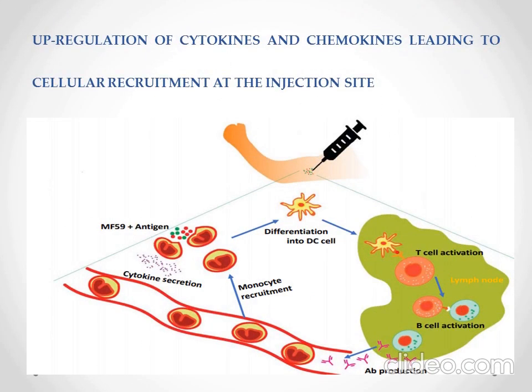The next step is the up-regulation of cytokines and chemokines, leading to cellular recruitment at the injection site. Adjuvants create a local pro-inflammatory environment and recruit immune cells. The cluster of genes encoding cytokines, chemokines, innate immune receptors, interferon-induced genes, and genes coding adhesion molecules — defined as adjuvant core response genes — are commonly modulated by adjuvants like ALUM, MF-59, and CpG-ODN at the site of injection.